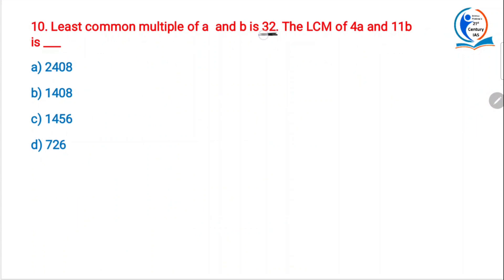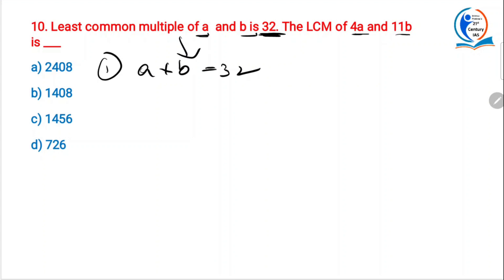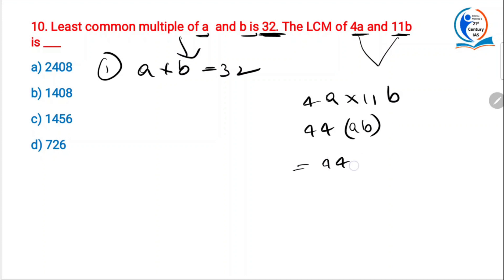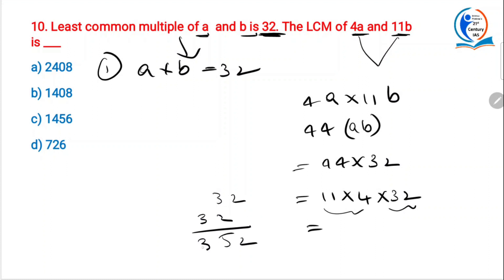Least common multiple of A and B is 32, so A × B = 32. The LCM of 4A and 11B: 4A × 11B = 44 × AB = 44 × 32. Write this as 11 × 4 × 32. 32 × 11 = 352. 352 × 4 = 1408. So the LCM of 4A and 11B is 1408.